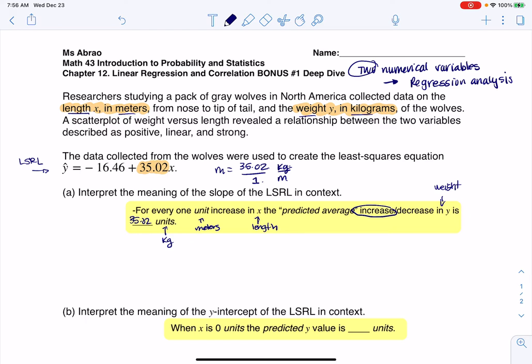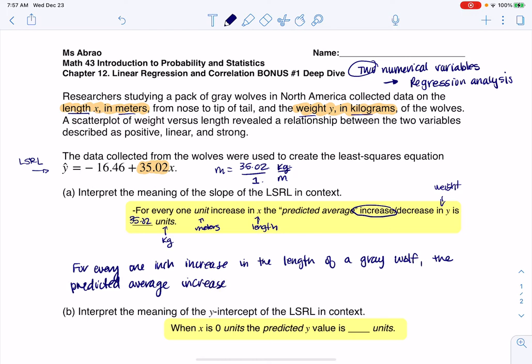So let's go ahead and write that up in a sentence. We would say for every one unit increase in the length of a gray wolf, the predicted average increase in weight is 35.02 kilograms.